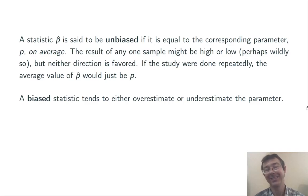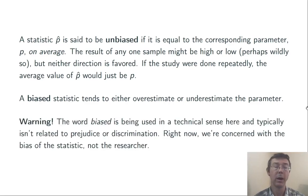A biased statistic is just one that's not unbiased. It tends to systematically either overestimate or underestimate the parameter. A word of warning here, we're using the word bias in a technical sense here. It's typically not referring to prejudice or discrimination, although those can be causes of bias, of course. To say it differently, right here we're concerned with the bias of the statistic, not of the researcher.